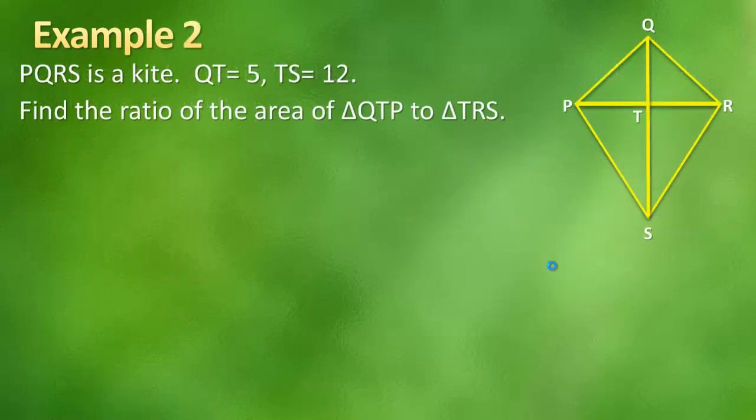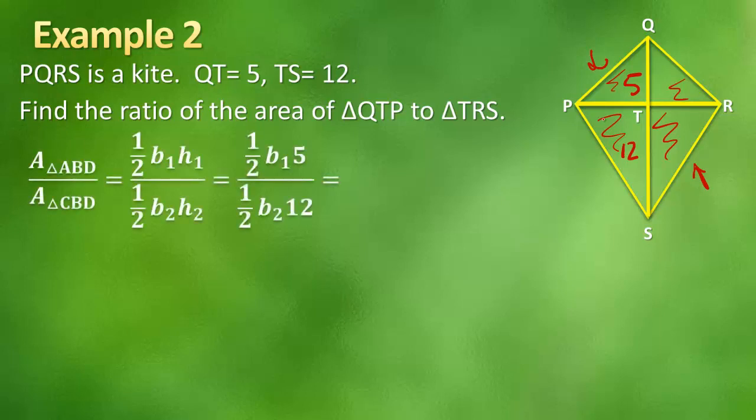Next example. PQRS is a kite. We know that QT is 5, and we know that TS is 12. So we need to find the ratio of the area of triangle QTP to TRS. And since this is a kite, that means that this and this are congruent, and this and this are congruent. So even though they're asking for this triangle and this triangle, it's okay, it doesn't matter.